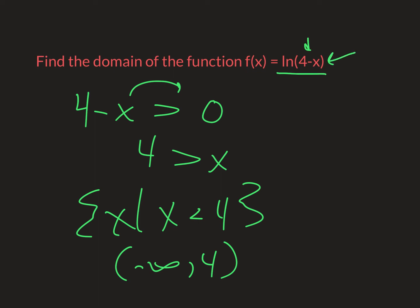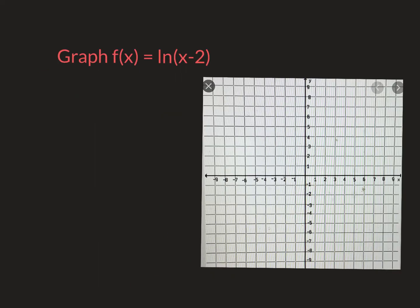So domain: whatever comes after your log has to be positive. That's where your domain comes from. And the last one: graph natural log. Now natural log, no big deal. First of all, I'm looking inside. No matter what the base is, I don't care if it's base 2, base 5, base 10, your asymptote is always the y-axis unless it's been shifted. This one's been shifted right 2, which means my asymptote is now at 2.